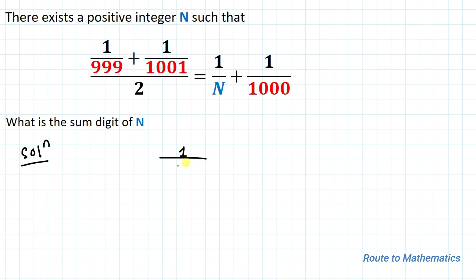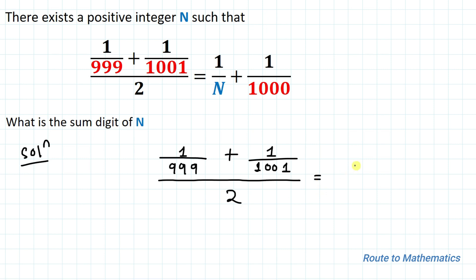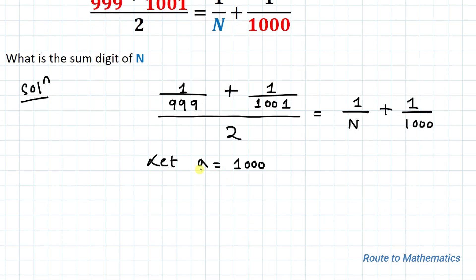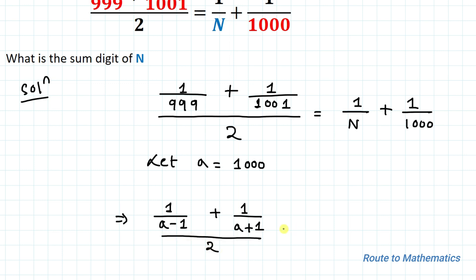We have given (1/999 + 1/1001) / 2 = 1/n + 1/1000. One thing you can observe is that both 999 and 1001 are close to 1000. So let's consider a = 1000. By assuming a = 1000, we can write the above equation as (1/(a−1) + 1/(a+1)) / 2 = 1/n + 1/a.